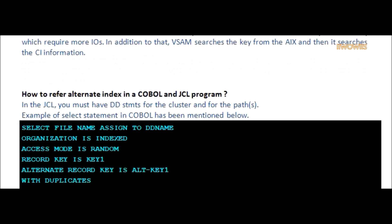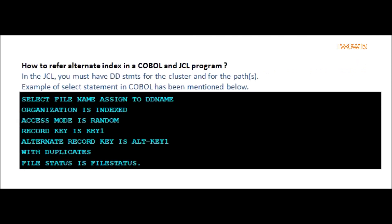Question: How do you refer to an alternate index in a COBOL and JCL program? Answer: In the JCL, you must have DD statements for the cluster and for the path. An example of the Select statement in COBOL has been mentioned. In addition to the cluster statements, you have to include the statement for the alternate index. Refer to the alternate record statement for reference.